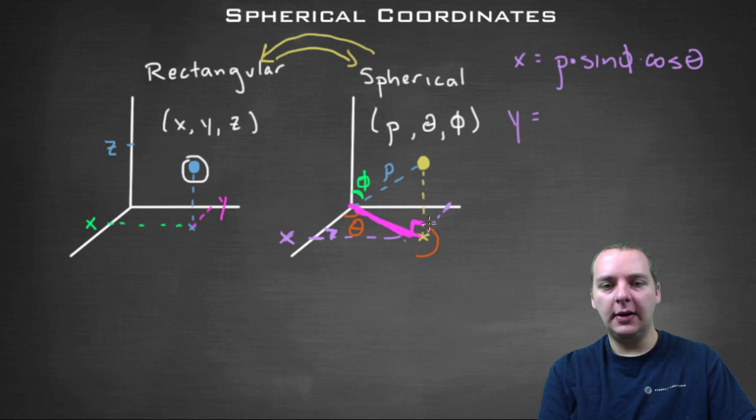So for that, we're going to use the same idea, but now the y value is the opposite edge, not the adjacent edge. So we're still going to need the same pink hypotenuse, which is still rho sine phi.